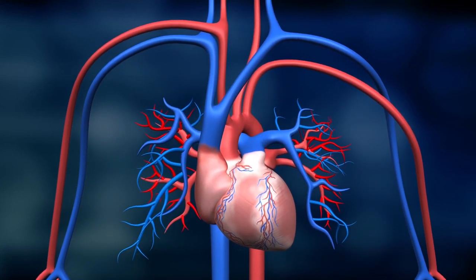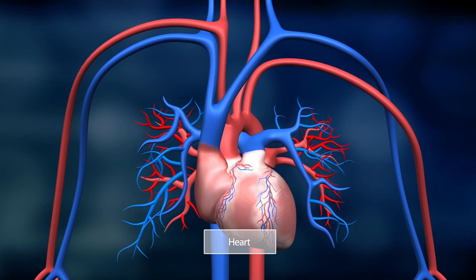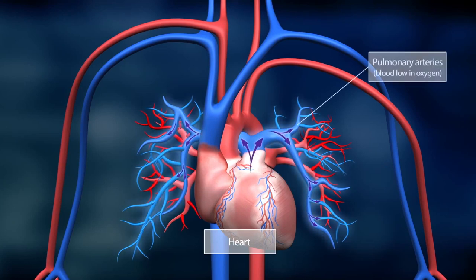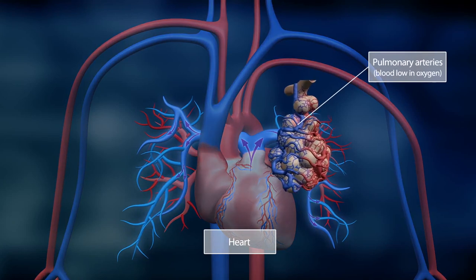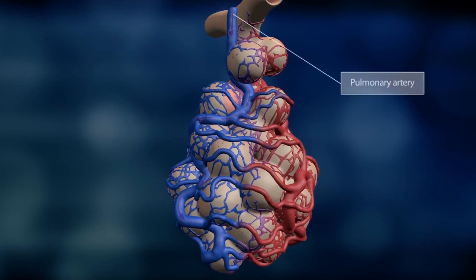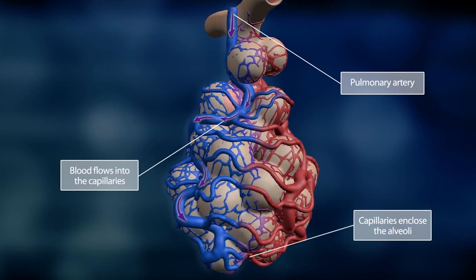Simultaneously, the heart pumps blood rich in carbon dioxide but poor in oxygen to the lungs through the pulmonary arteries. The pulmonary arteries branch out in a mesh of tiny blood vessels called capillaries. This capillary network surrounds round air sacs called alveoli.